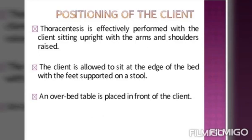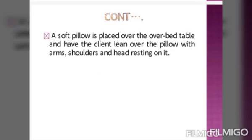Positioning of the client: Thoracocentesis is effectively performed with the client sitting upright with the arms and shoulders raised. The client is allowed to sit at the edge of the bed with the feet supported on a table. An over-bed table is placed in front of the client, with a soft pillow placed over it, and the client leans over the pillow with the arms, shoulders, and head resting on it.